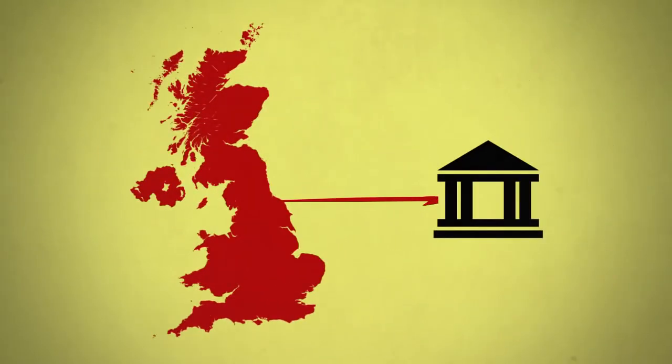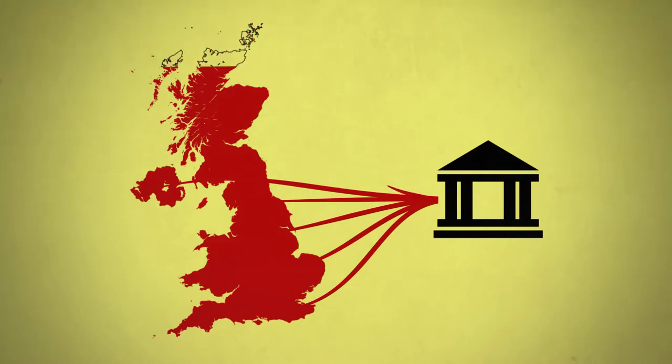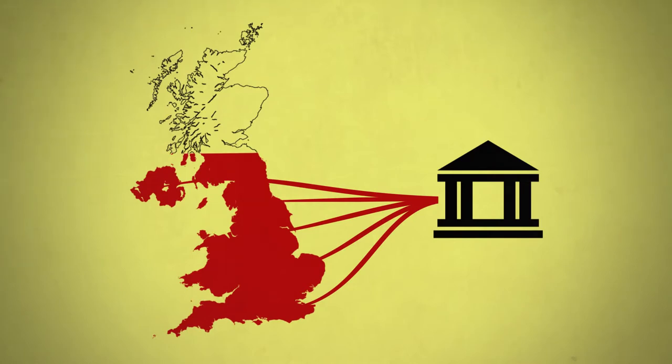It means that almost all the money in the economy is effectively on loan from the banks, and we have to pay interest on nearly every pound that exists. If we try to pay down our debts, money disappears from the economy, making it harder for others to repay their own debt.